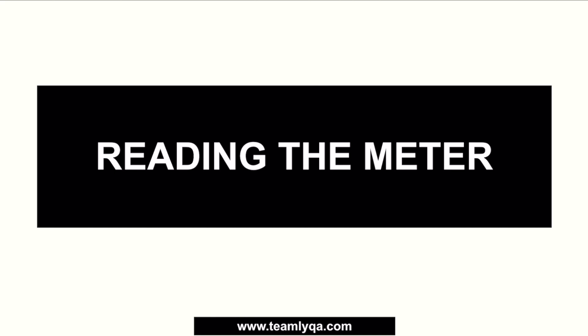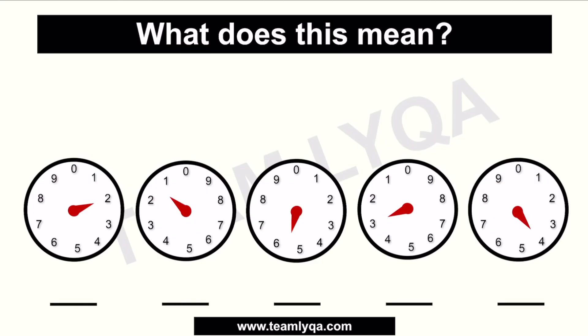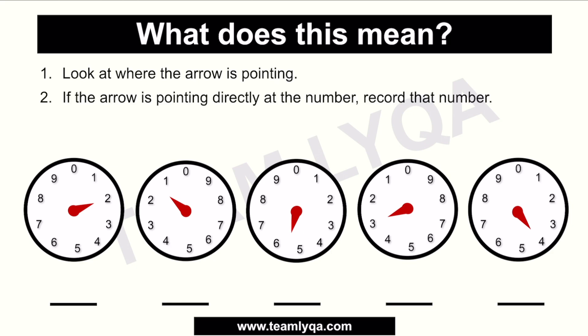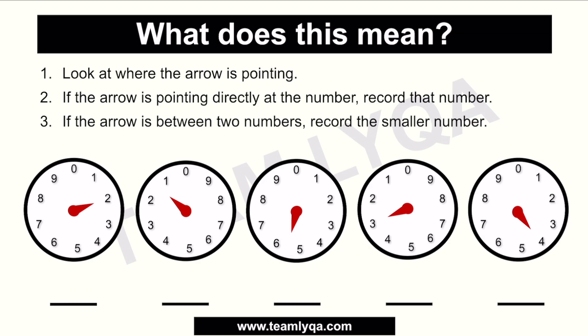What does the meter look like? If you go outside your house or look around your neighborhood, you'll usually find meters that have dials like these — faces that look like clock dials. The way you read them works like this: first, you look at where the arrow is pointing. If the arrow is pointing directly at a number, you just record that number. If the arrow is in between two numbers, you record the smaller of the two numbers.